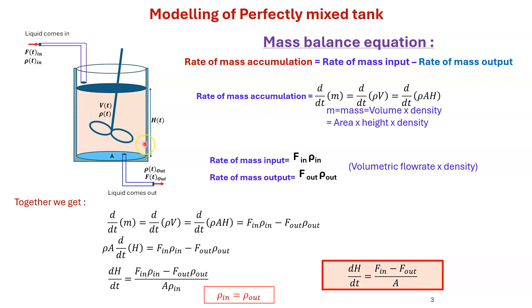So if we know F_in, F_out, and the area of the tank A, we can easily calculate how the liquid height H changes with time. The result is: dH/dt (rate of change of height) = (volumetric flow rate in − volumetric flow rate out) / tank area.